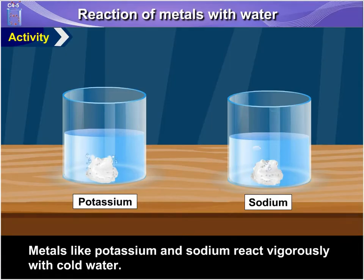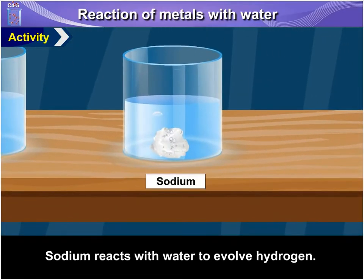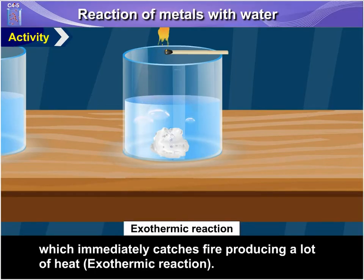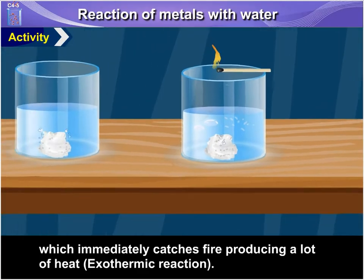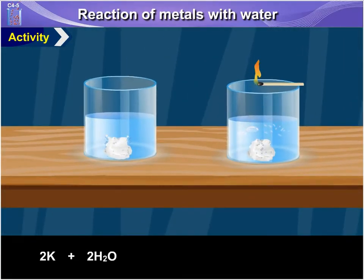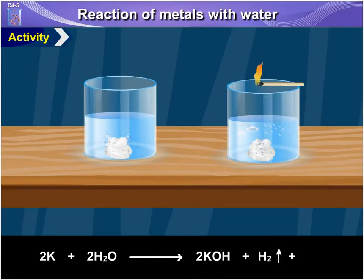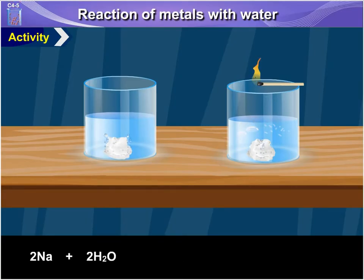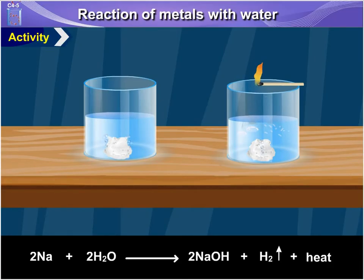Metals like potassium and sodium react vigorously with cold water. Sodium reacts with water to evolve hydrogen, which immediately catches fire producing a lot of heat. It is an exothermic reaction. 2K + 2H₂O → 2KOH + H₂ + heat. 2Na + 2H₂O → 2NaOH + H₂ + heat.